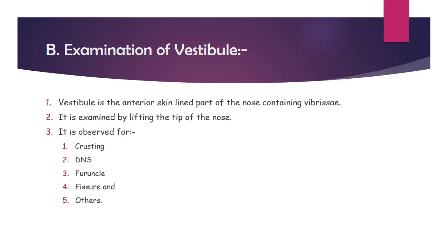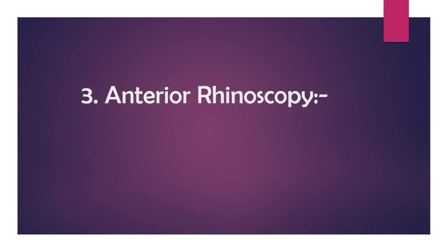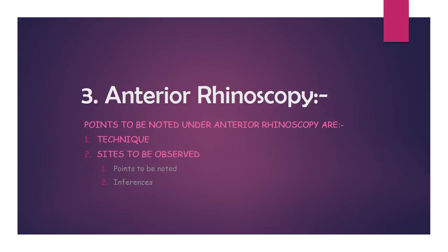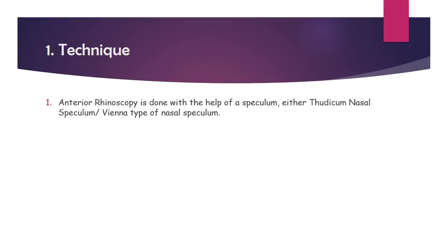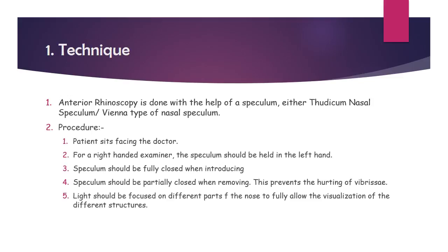The next point: anterior rhinoscopy. Points to be noted under anterior rhinoscopy are the technique and the sites to be observed — this is true for posterior rhinoscopy as well. Anterior rhinoscopy is done with the help of a speculum, either the Thudicum or the Vienna type of nasal speculum. The difference is that the Thudicum speculum is not self-retaining, whereas the Vienna type is.